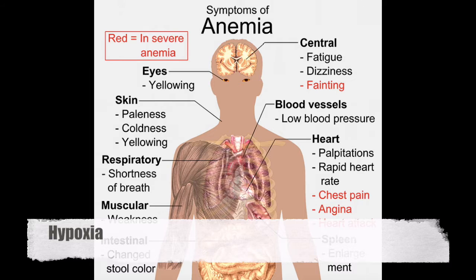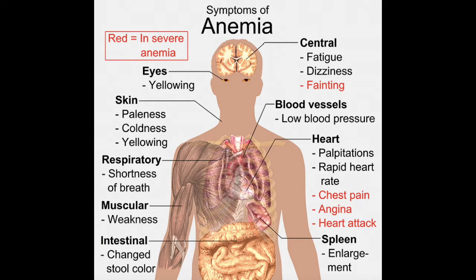Some of those signs would include weakness, fatigue, and dyspnea — dyspnea being shortness of breath — as well as pale conjunctiva in the skin, which is a relatively good clinical test. Pale conjunctiva is a good sign that there is an anemia. The patient may also present with headache and lightheadedness due to hypoxia to the central nervous system, in particular the brain, and may even exhibit signs and symptoms of angina.